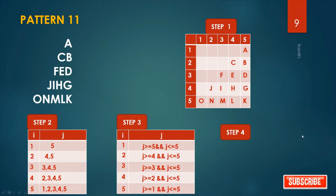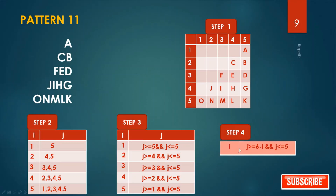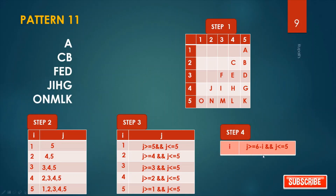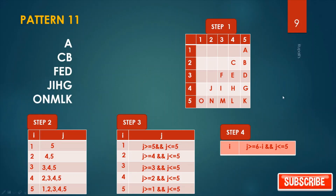What is the general condition? General condition: j >= (6 - i) and j <= 5. For all cases it is j <= 5 and j >= (6 - i). This is our general condition.